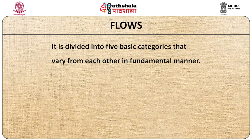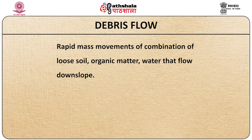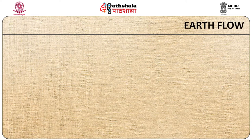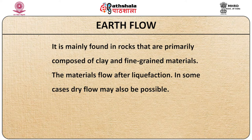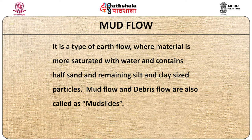Flows are divided into five basic categories: Debris flow is rapid mass movement of loose soil, organic matter and water flowing downslope. Debris avalanche is an extremely rapid type of debris flow. Earth flow is mainly found in rocks primarily composed of clay and fine-grained materials, where material flows after liquefaction. Mud flow is a type of earth flow where material is more saturated with water, containing half sand and remaining silt and clay-sized particles. Mud flow and debris flow are also called mudslides.